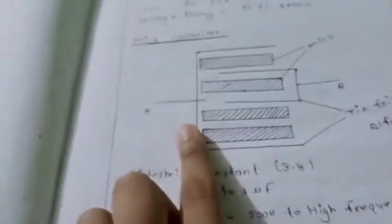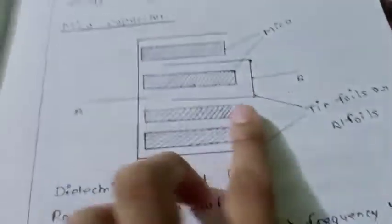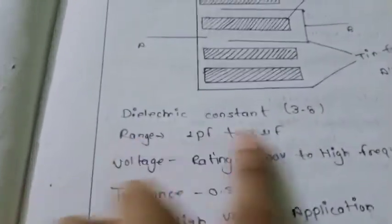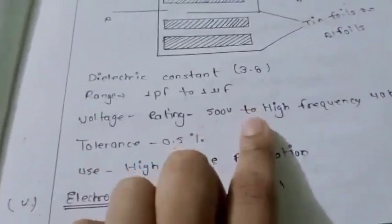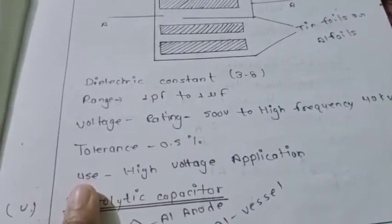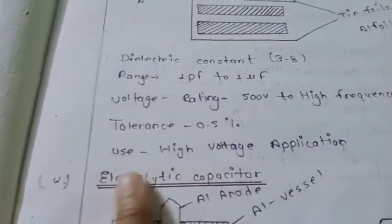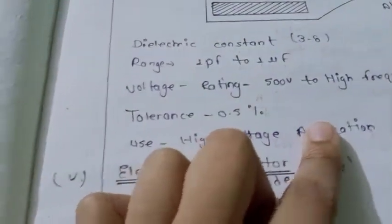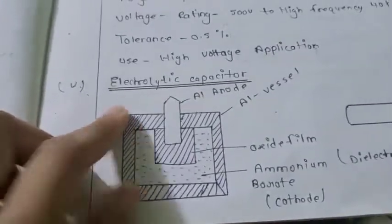Mica capacitor uses mica rod with tin foils and aluminum foils. Dielectric constant is 3 to 8. Range is 1 picofarad to 1 microfarad, voltage rating 500 volt to 40 kilovolt for high frequency. Tolerance is 0.5 percent, used in high voltage applications. Electrolytic capacitor is shown here with aluminum.